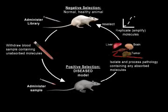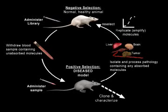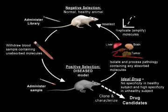The drug development process, which involves repeated rounds of negative and positive selection, increases library specificity. Eventually, the majority of the library becomes enriched with highly specific molecules. At this point, the library is sorted and characterized for drug candidates. The ideal drug exhibits absolutely no interaction on healthy tissue and high specificity in diseased tissue.